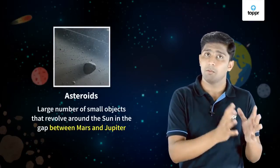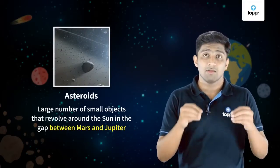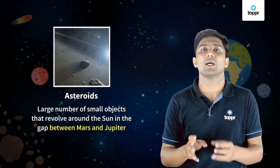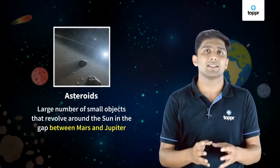There is a big gap between Mars and Jupiter. This gap is occupied by some other objects which revolve around the sun, which are called asteroids. You can see asteroids only through large telescopes.